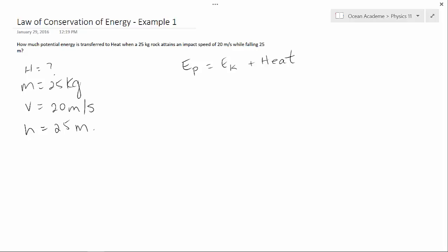Potential energy is mass times gravity times height. And kinetic energy is one-half mass times velocity squared.